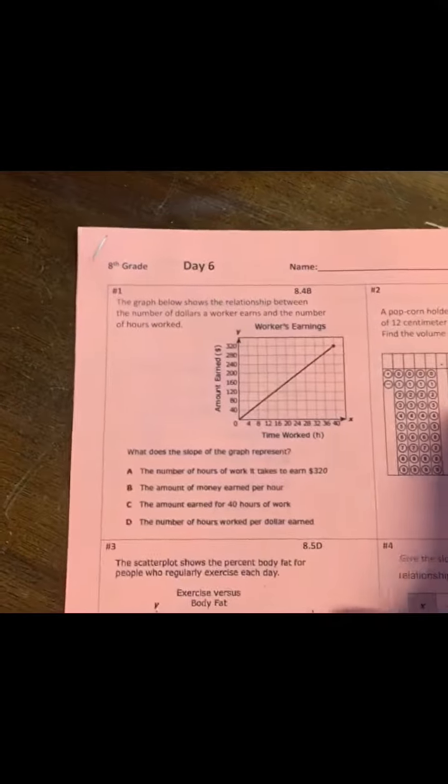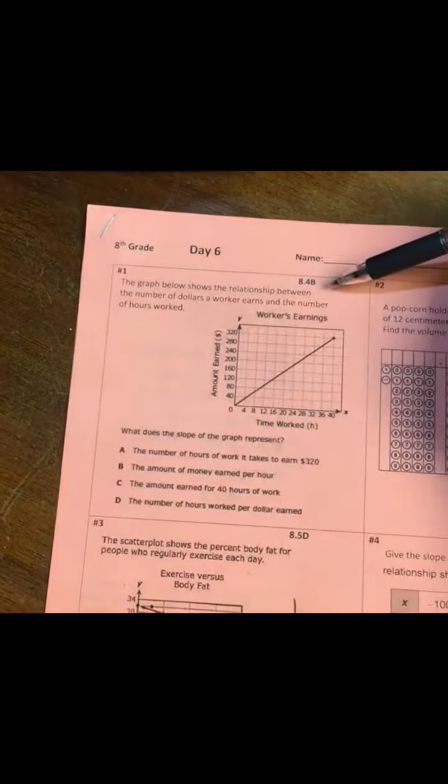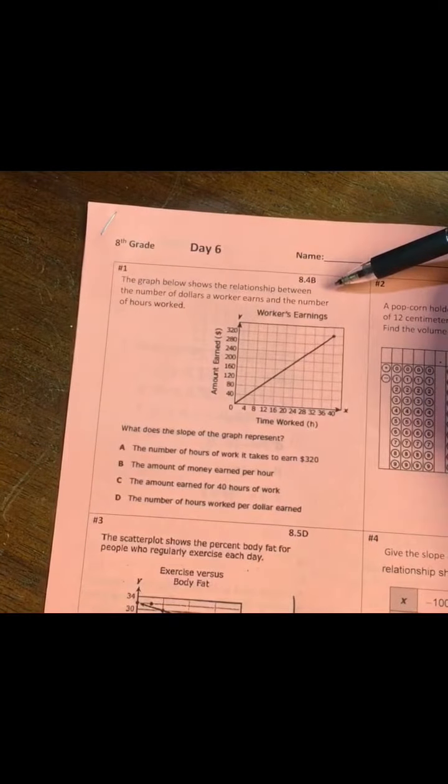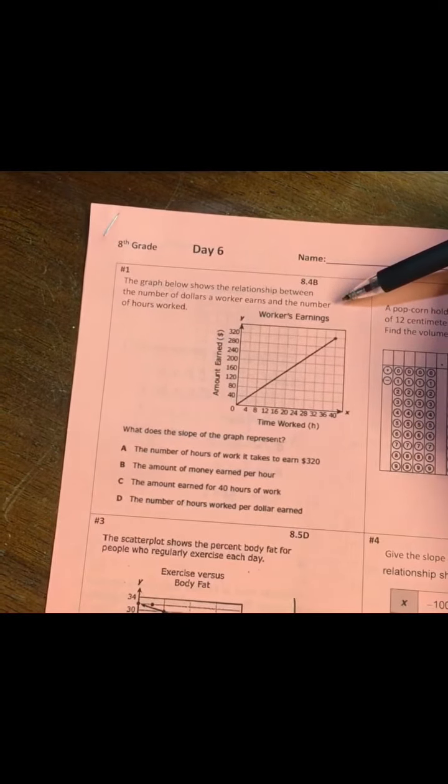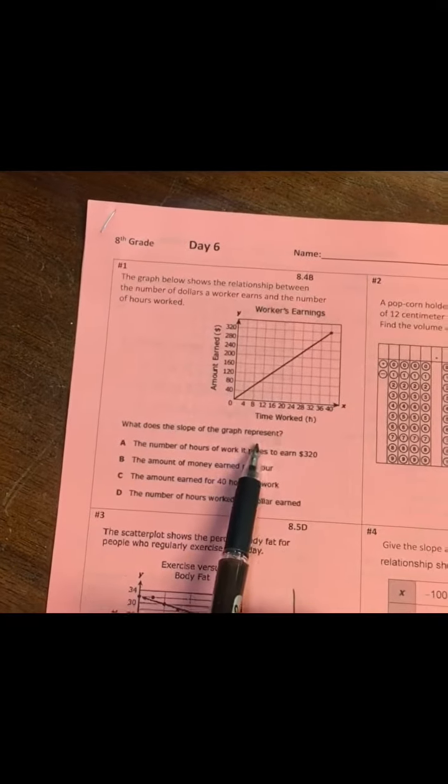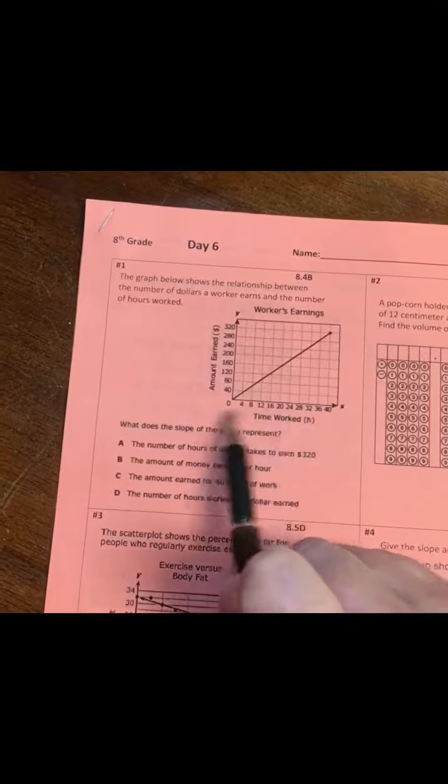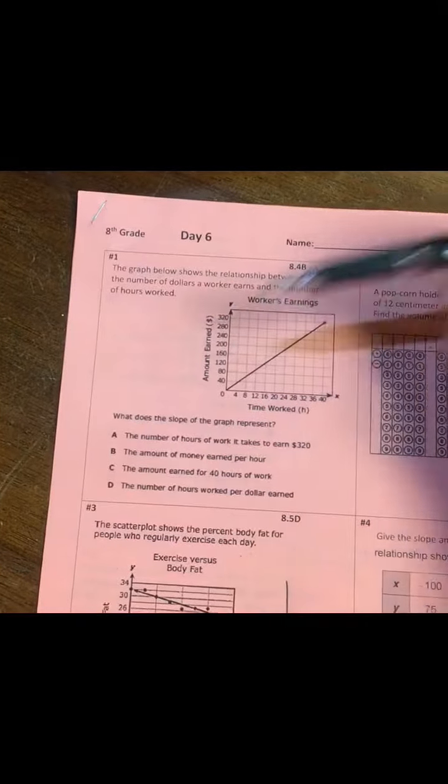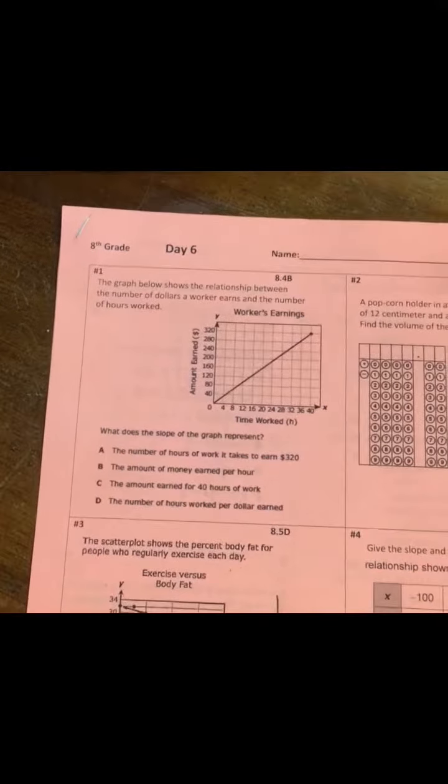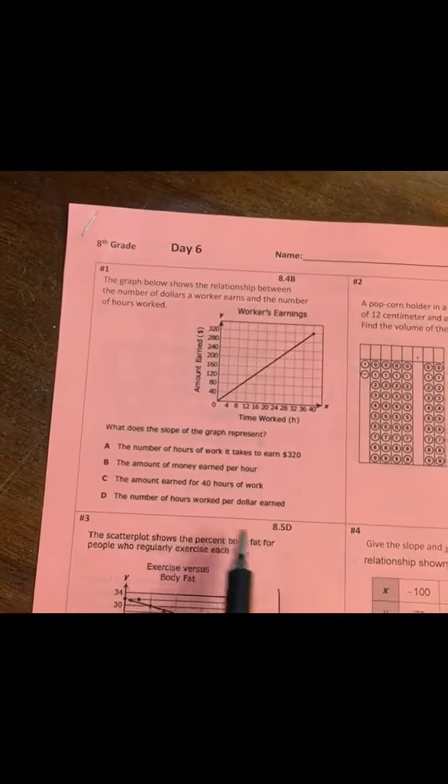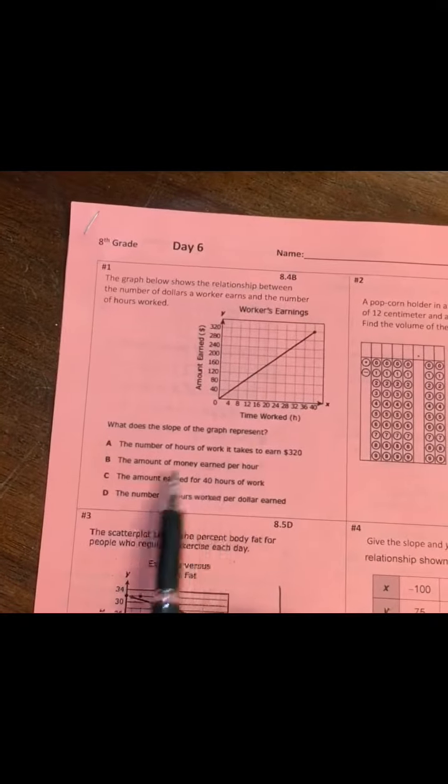Okay, so Day 6, number one. The graph below shows the relationship between the number of dollars a worker earns and the number of hours worked. What does the slope of the graph represent? So on our x-axis we have time worked, on our y-axis we have the amount of money earned.